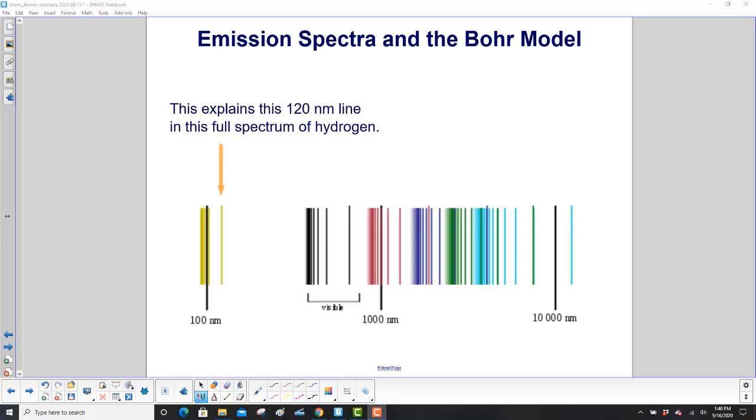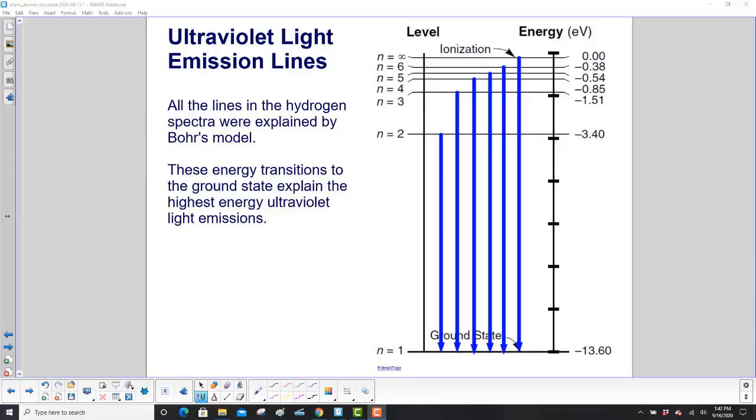We have here the hydrogen spectrum again, and we showed that 120 nanometer line. That was from n equals 2 down to n equals 1. Here's 100 nanometers, here's 1,000 nanometers, here's 10,000 nanometers. Right over here, you have a line at 120 nanometers. That's explained by that energy level diagram from the previous slide. All the lines in the hydrogen spectrum were explained by Bohr's model. Starting with the n equals 2 to n equals 1 transition, the 120 nanometer line, and all of these had the highest energy ultraviolet light emissions.